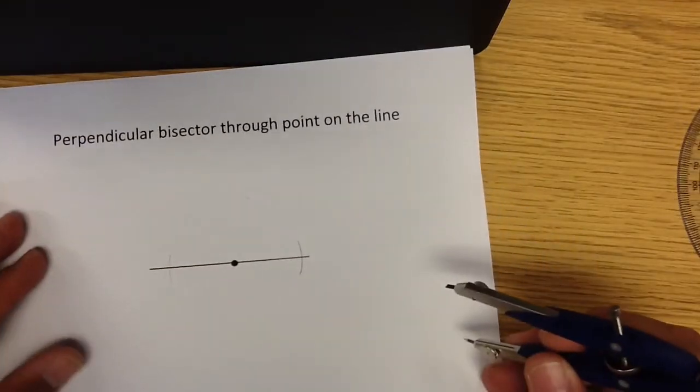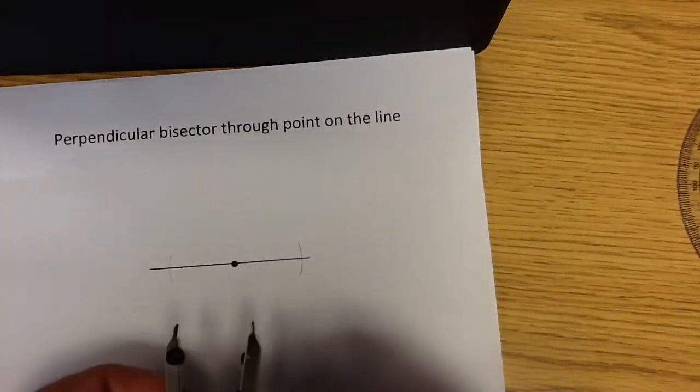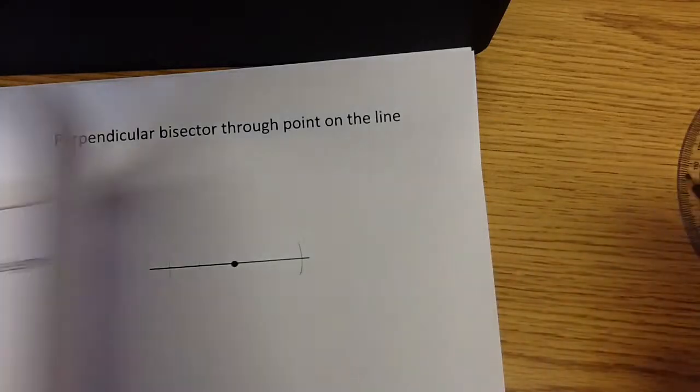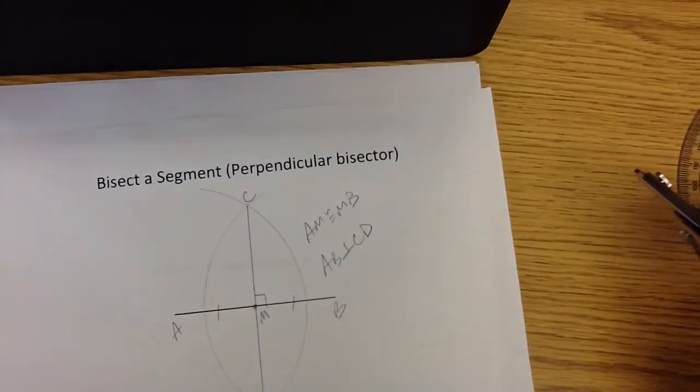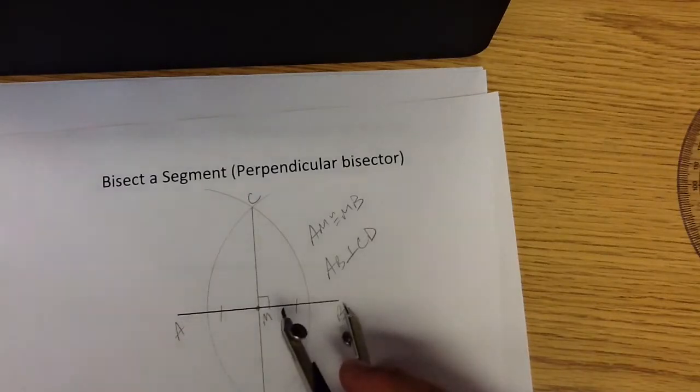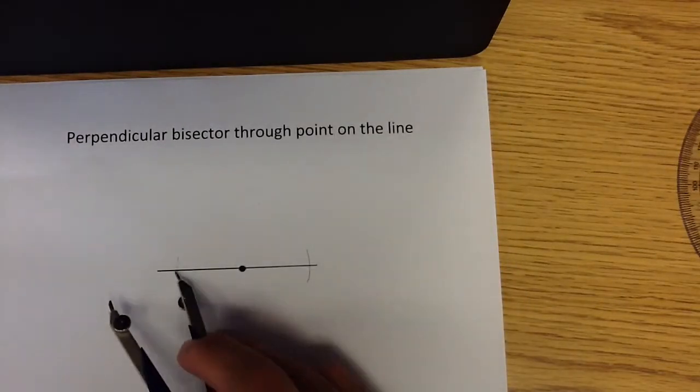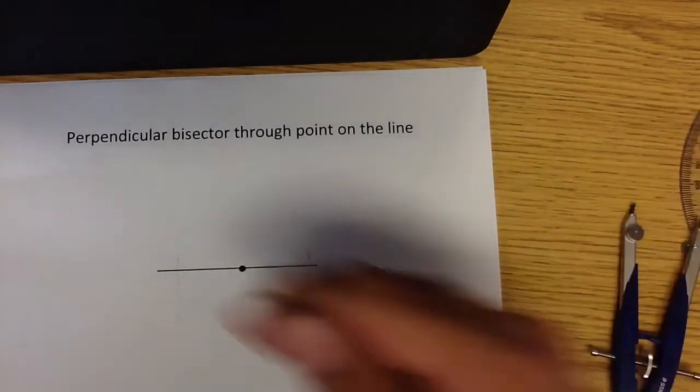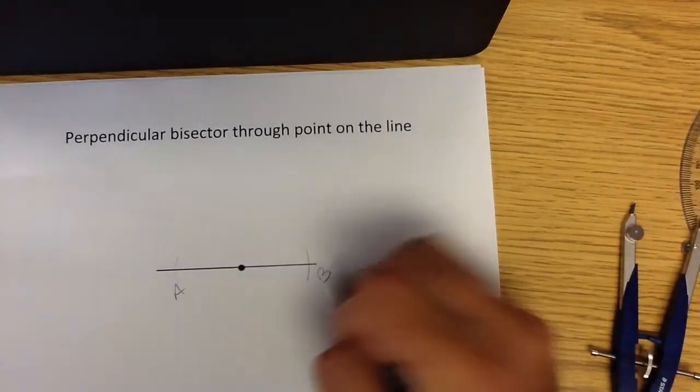So what I'm going to do is I'm going to make those two and then from here you're basically going to follow the construction that we did earlier which is a perpendicular bisector and we're going to use A and B as my new points A and B. So I'm actually going to label this A and B.